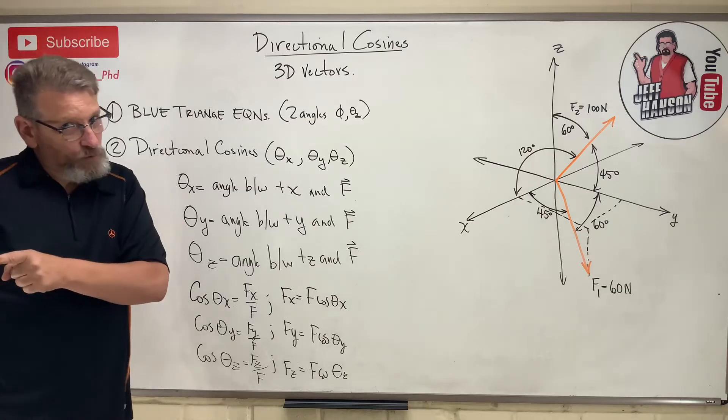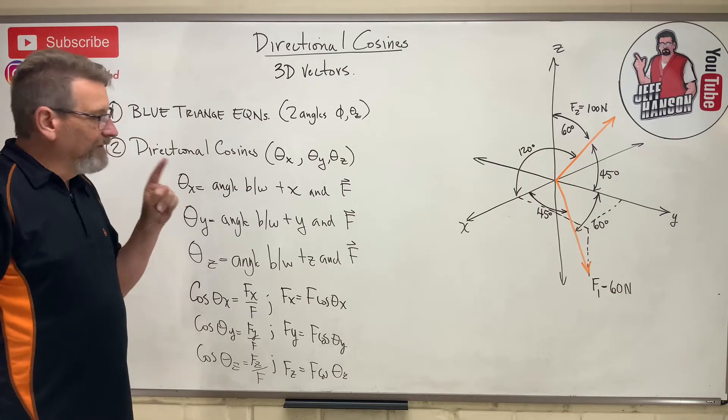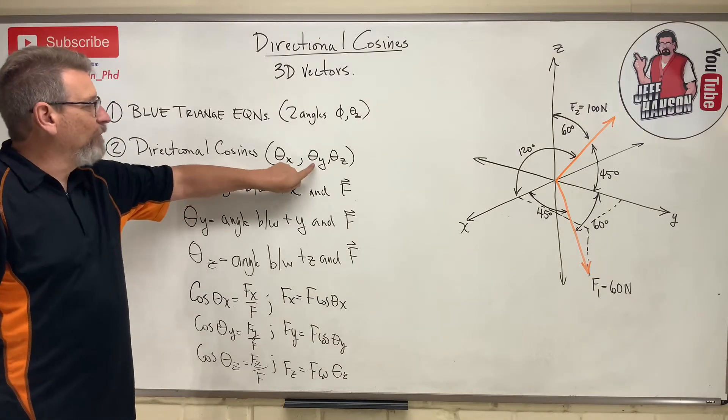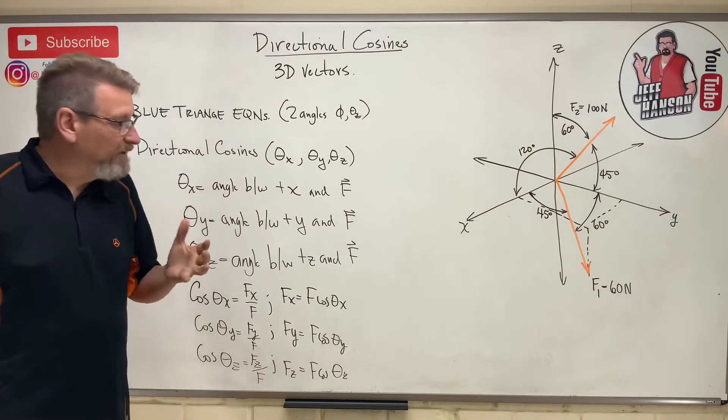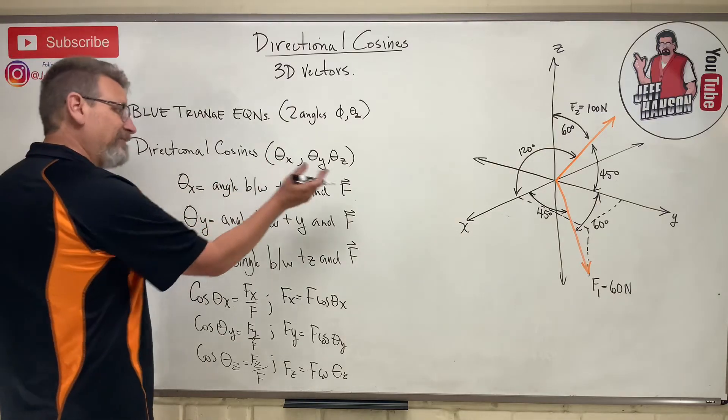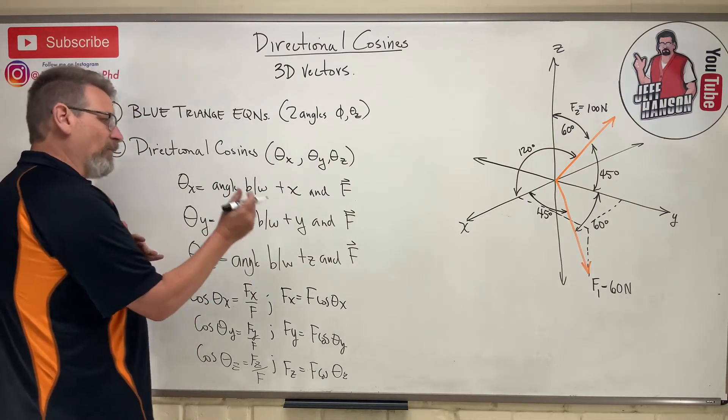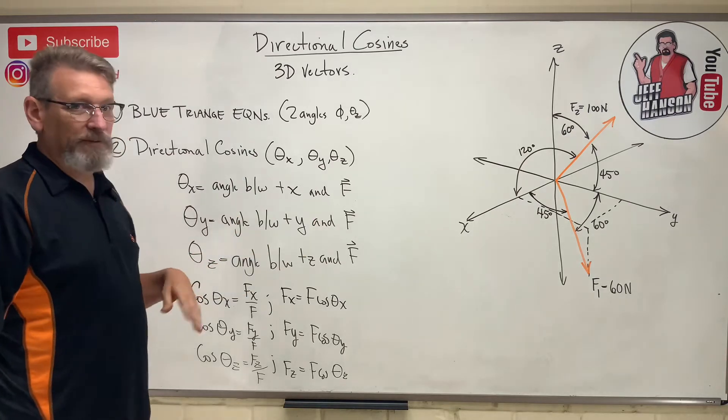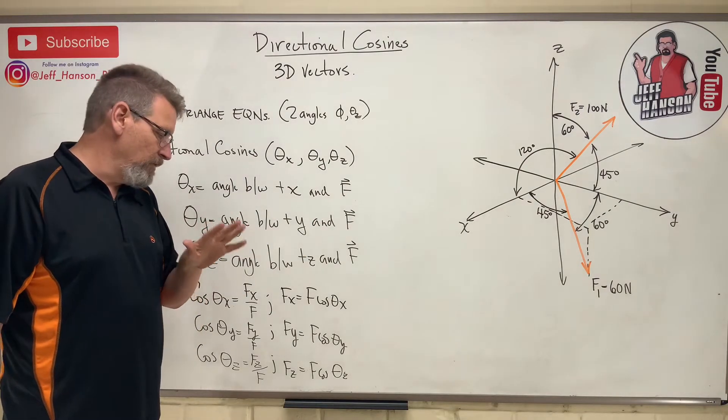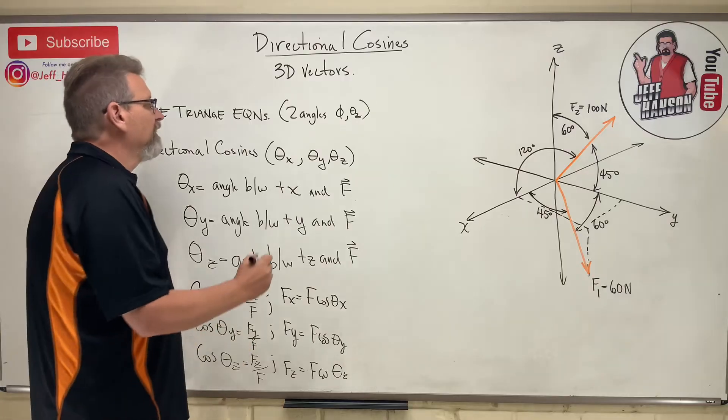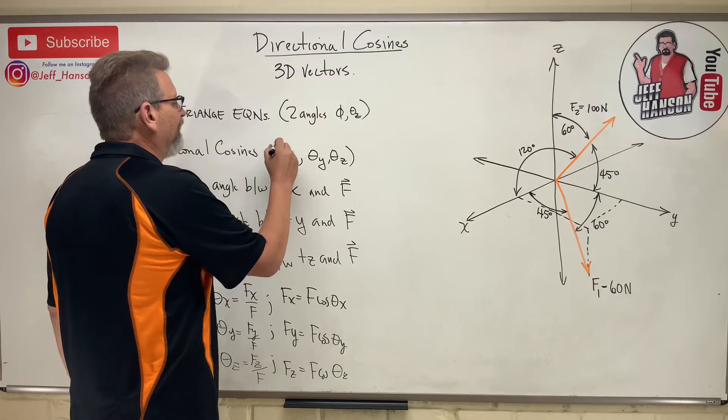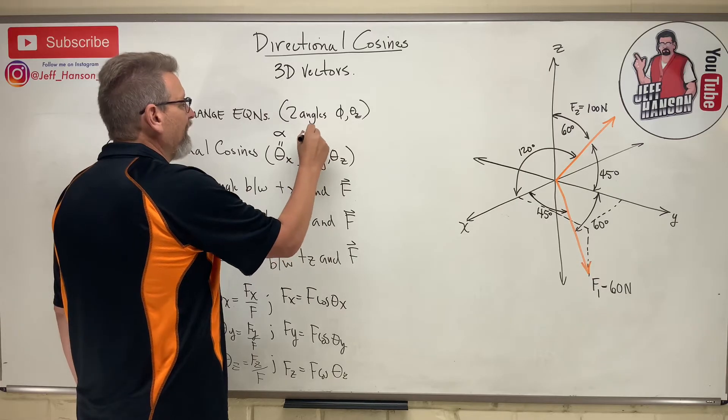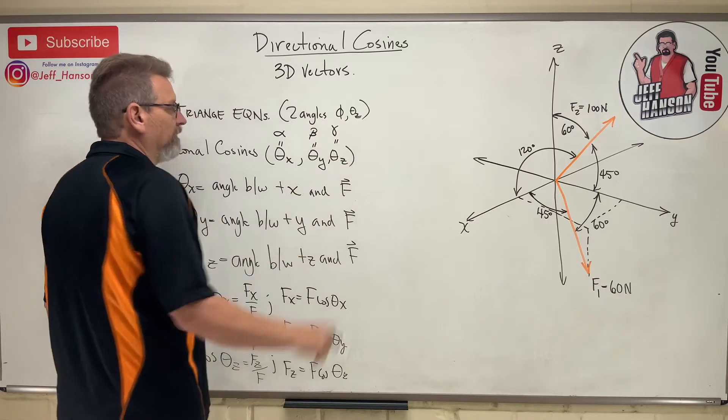One more thing you want to know about here. If you're reading the Hibbeler book, I like theta x, theta y, and theta z because they're very descriptive. The theta x is between the x and the vector, theta y between the y and the vector, theta z between the z and the vector. But would Hibbeler use that? No. That's way too complicated. So he calls this guy alpha, this guy beta, and this guy gamma.